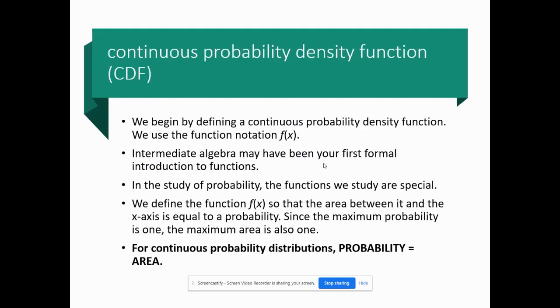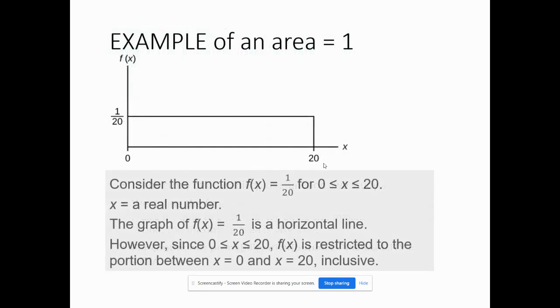We begin by defining the continuous probability density function. We use the notation of f(x). The most important thing about this slide - for continuous probability distribution, probability equals the area. The area under the curve is the same as the probability. That's it.